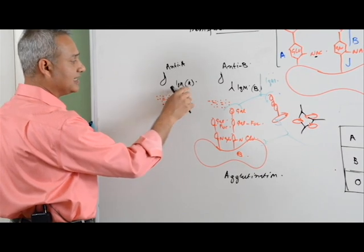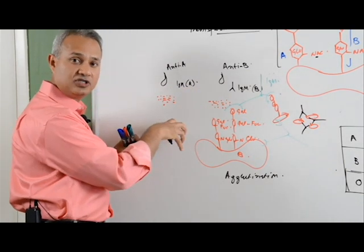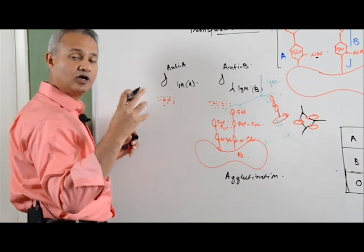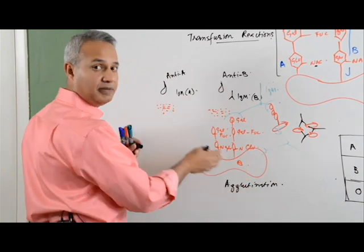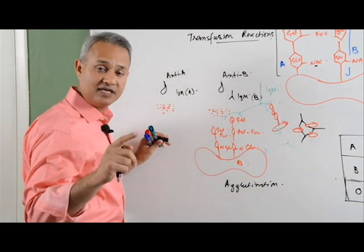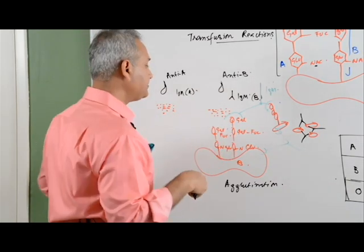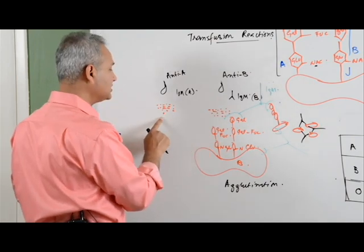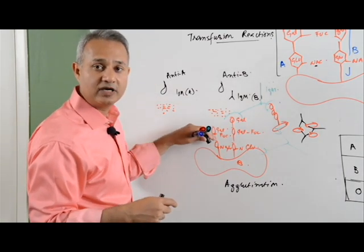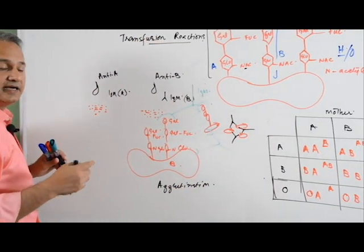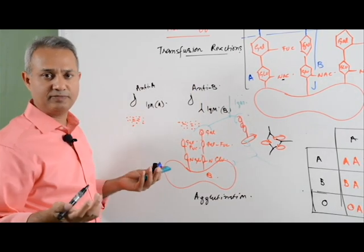On the anti-A side, the antibody against A has no place to attach because my blood cells only have B antigen. So the blood stays fluid on that side — no clumping. Based on this, the blood group is determined to be B. If the B side did not clump but A became agglutinated, the blood group is A. If both sides clumped, the blood group is AB — both antigens present. If neither side clumped, the blood group is O — no A or B antigen, only H antigen, which does not show antigenicity.